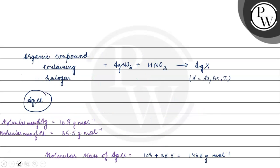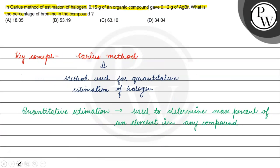So here we have 0.15 gram of organic compound and 0.12 gram of AgBr. The percentage of bromine comes out to the correct answer being Option B: 34.04. I hope all of you understood this. Thank you and all the best.